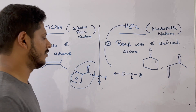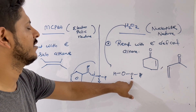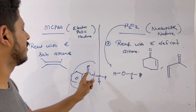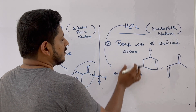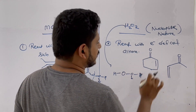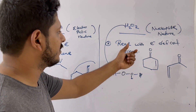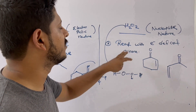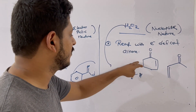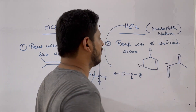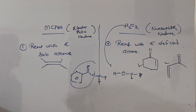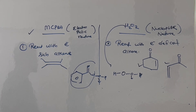H₂O₂ is comparatively electron-rich with respect to mCPBA. In mCPBA, because of the acyl group, the peroxide oxygen is highly electron-deficient, but in H₂O₂ the oxygen is not as electron-deficient — it is comparatively electron-rich. So H₂O₂, being nucleophilic, will react specifically with electron-deficient alkenes such as alpha-beta unsaturated carbonyl compounds.